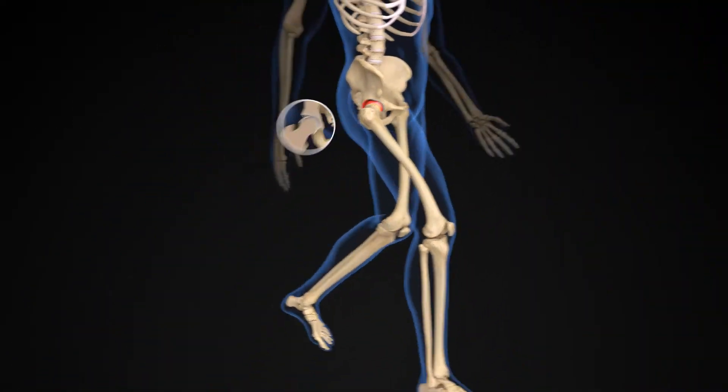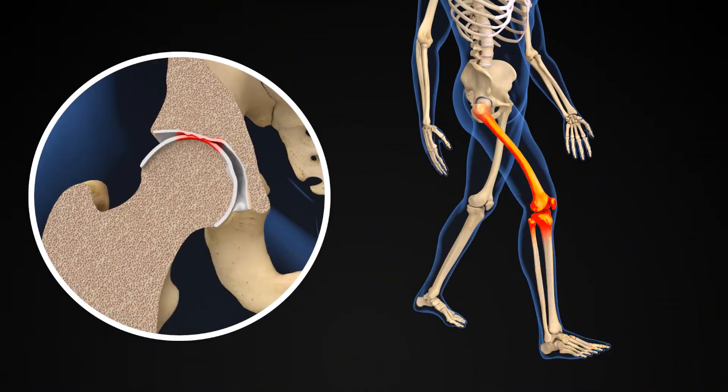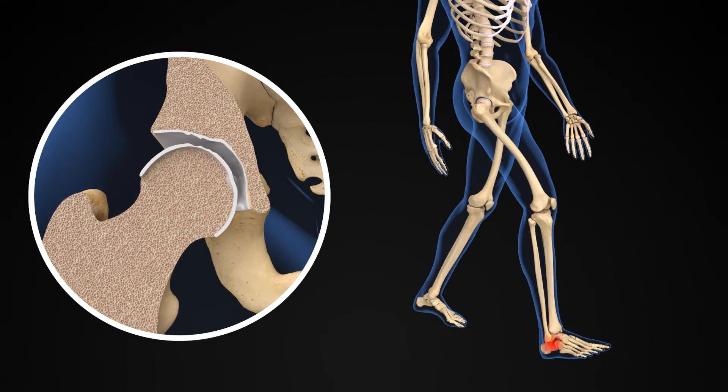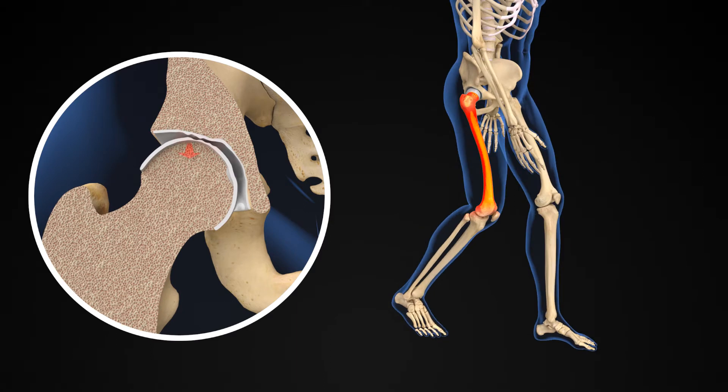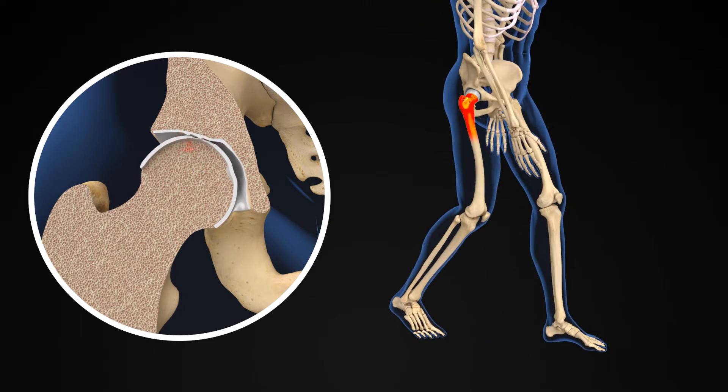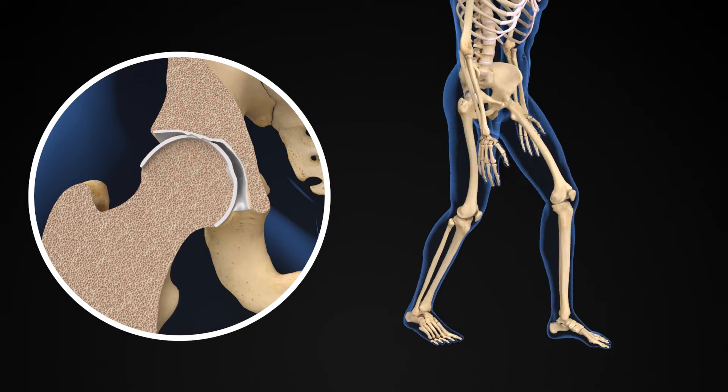Any weight-bearing activity, such as walking, can exert a force of two to three times your body weight to the compromised cartilage in your hip. During the swing phase of walking, the weight of the leg can distract the hip joint.